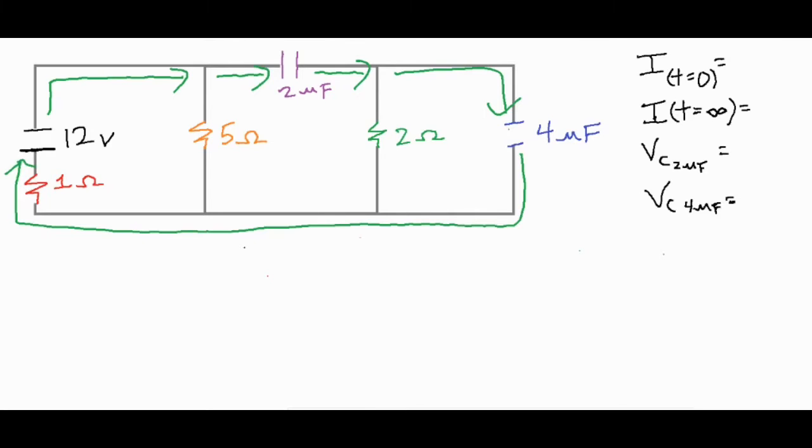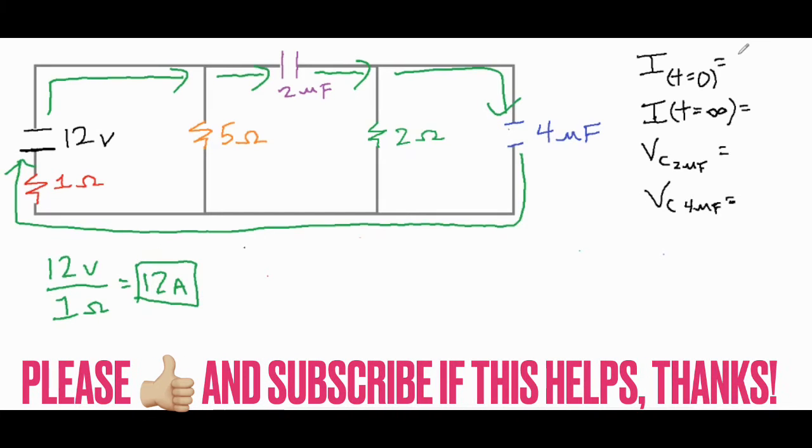Now with that being said, that means we can use Ohm's law and have a total voltage of 12 divided by the total resistance of 1 ohm, which gives us 12 amps of current for our first answer. So immediately after the switch is closed we have 12 amps running temporarily.